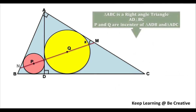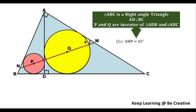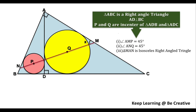We now have angle x equal to 45 degrees. We can draw further conclusions: angle ANQ will also be 45 degrees by applying similar reasoning to the other part of the triangle. Furthermore, triangle MAN will be an isosceles right angle triangle. This is a very good Olympiad question. The conclusion derived here can be used as a foundational result for more difficult Olympiad problems, so remembering it will be very beneficial.